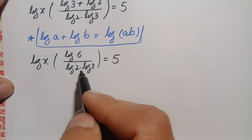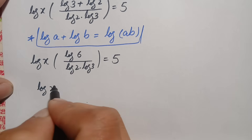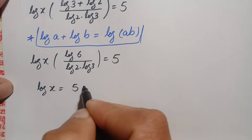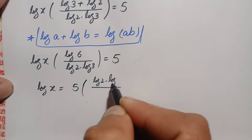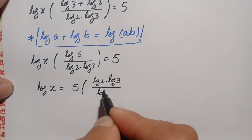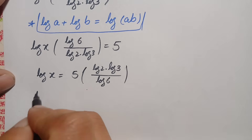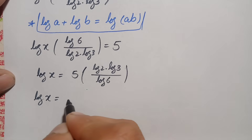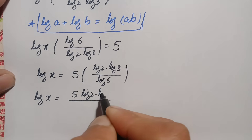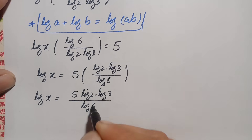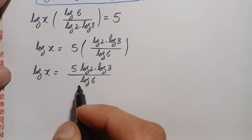We move the fraction to the right hand side — its reciprocal moves to the numerator, giving: log of x is equal to 5 times log of 2 times log of 3, divided by log of 6. This is our key equation. There are two possible approaches to solve further.